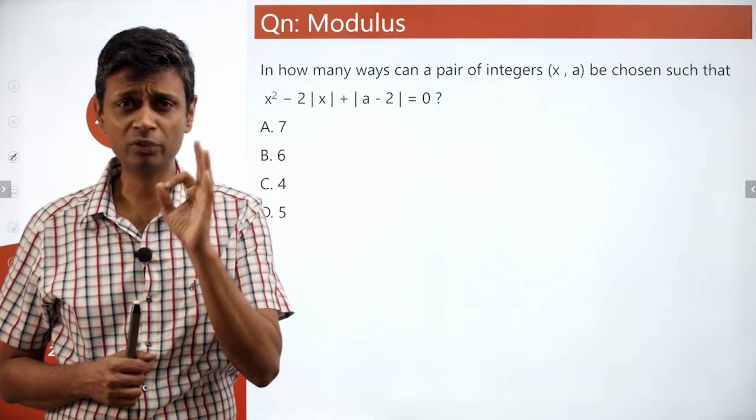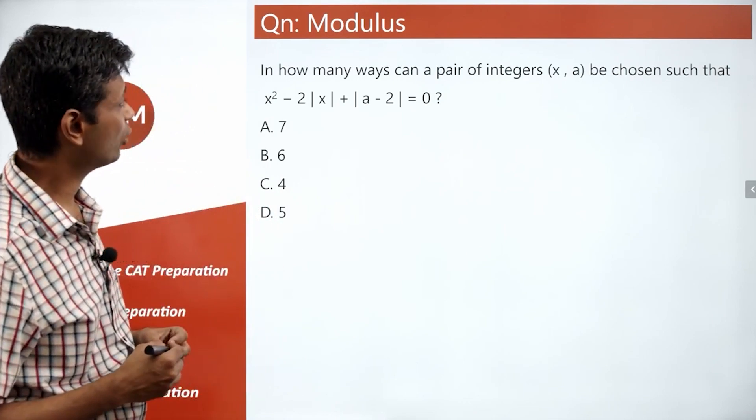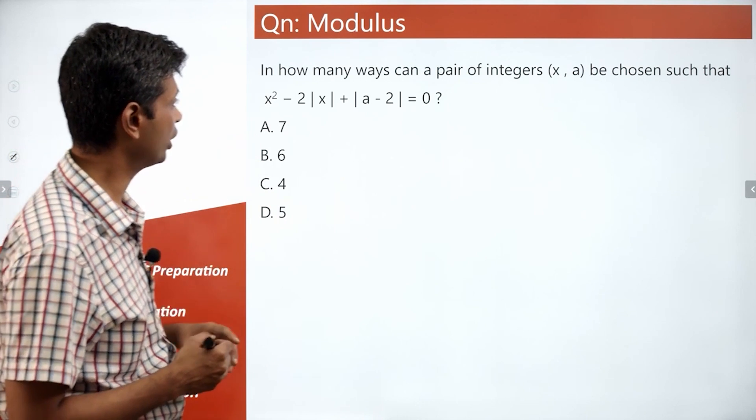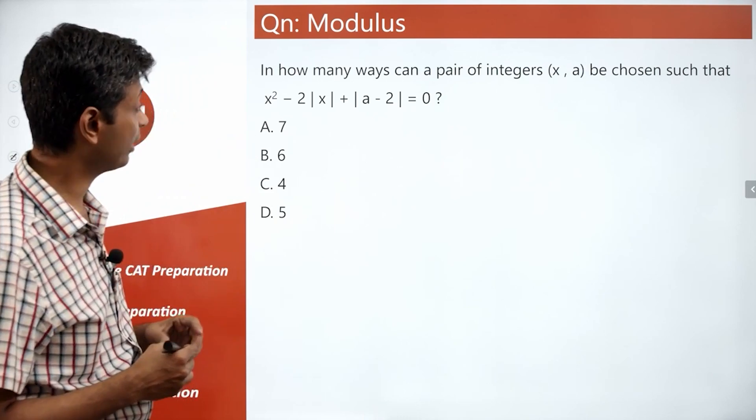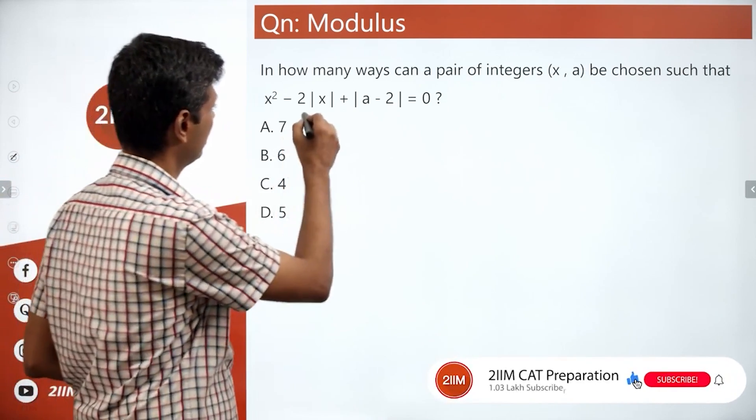It's a lovely, wonderfully challenging question. Let's look at this one. In how many ways can a pair of integers x, a be chosen such that x squared minus 2 mod x plus modulus of a minus 2 is equal to 0?